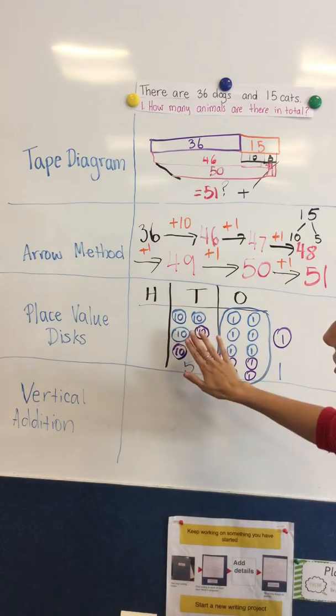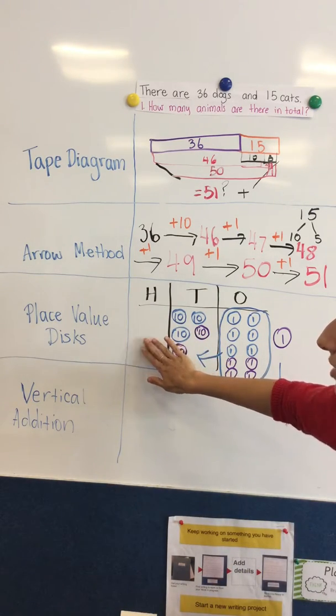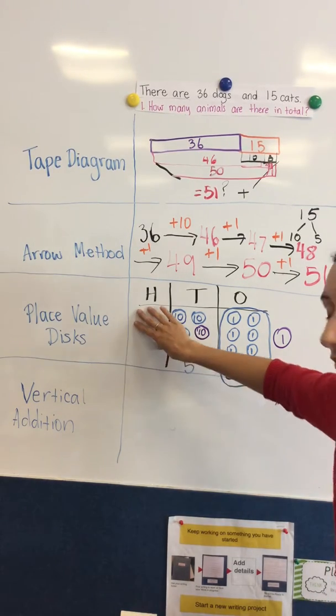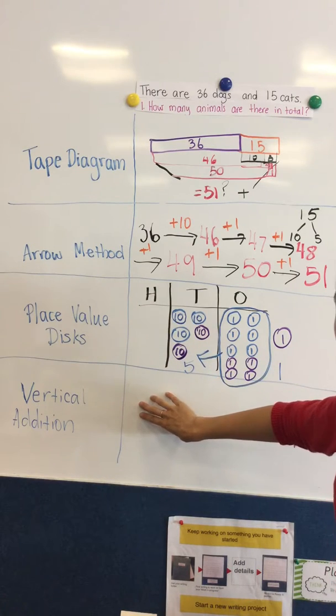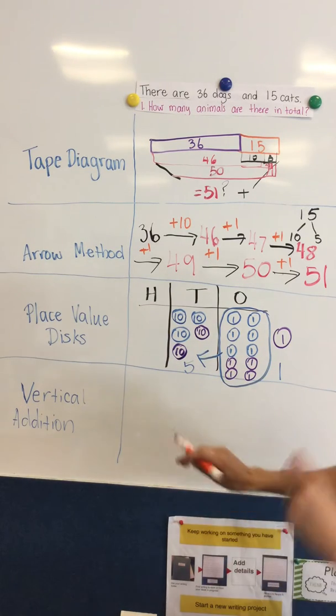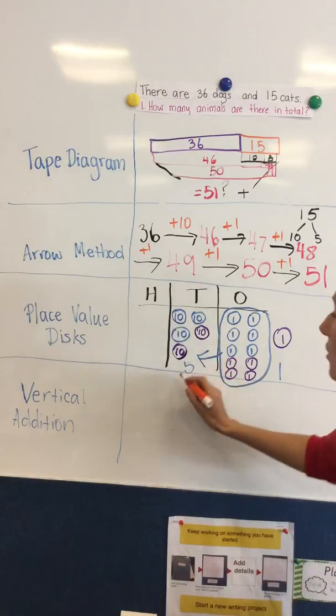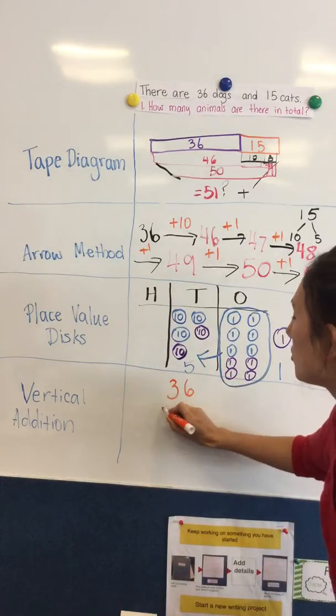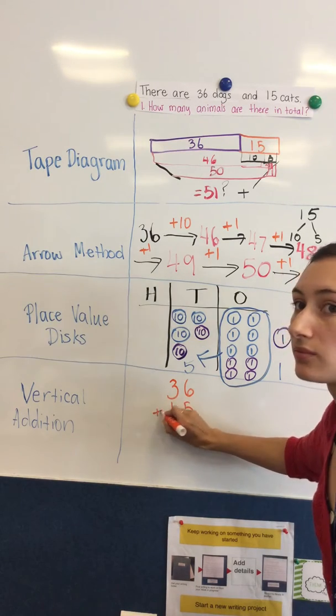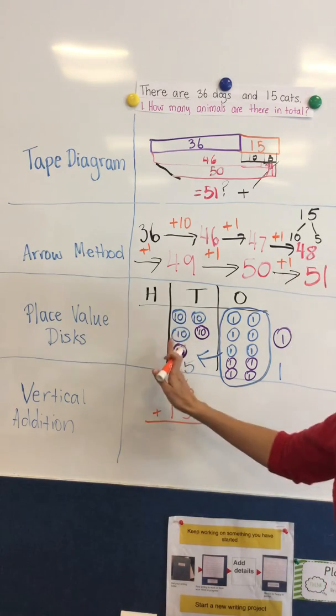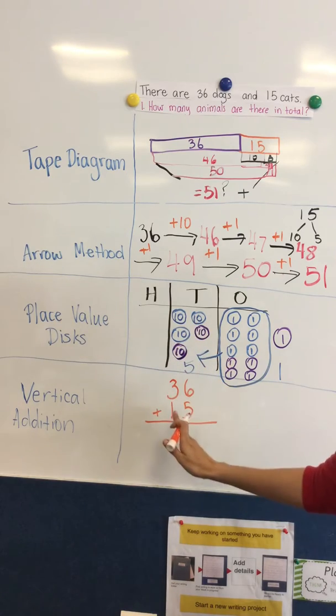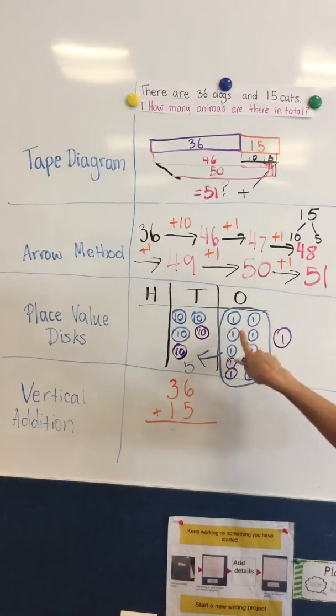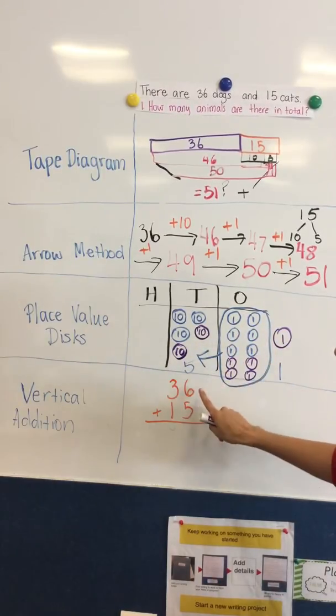The place value disks is the way that we learn more about the vertical addition, and I'll show you how this would be the first step before children can actually do this next way. So with vertical addition we would write the numbers out on top of each other so that the tens are aligned and the ones are aligned. Then we add up just like we did with the place value disks, one column at a time.